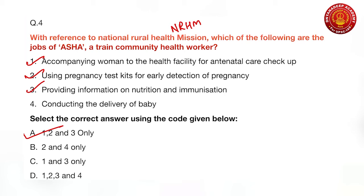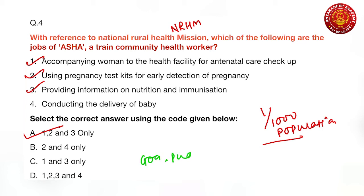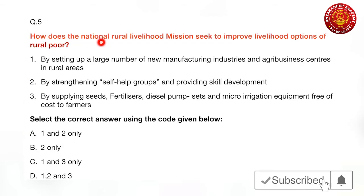ASHA is a major strategic intervention under NRHM. ASHA is expected to work as a trained women community health worker. Her functions include universal immunization, safe delivery, care of the newborn, prevention of waterborne and communicable diseases, improving nutrition, and promotion of household sanitary toilets. There should be at least one ASHA per 1,000 population. An important exception: the scheme has been extended to the whole country except Goa, Puducherry, and Chandigarh.